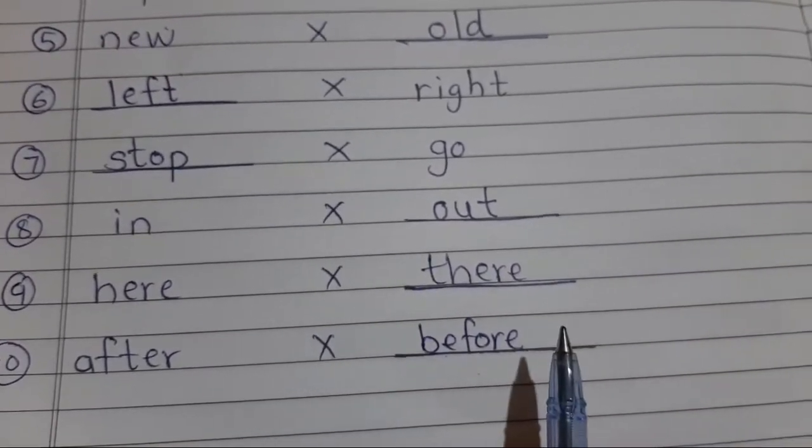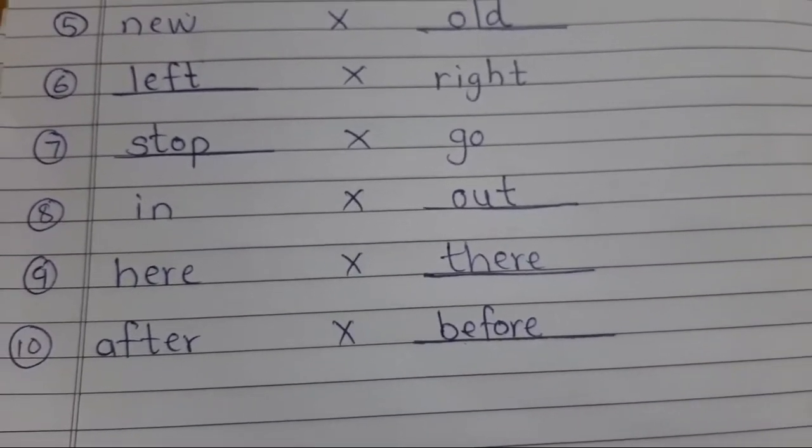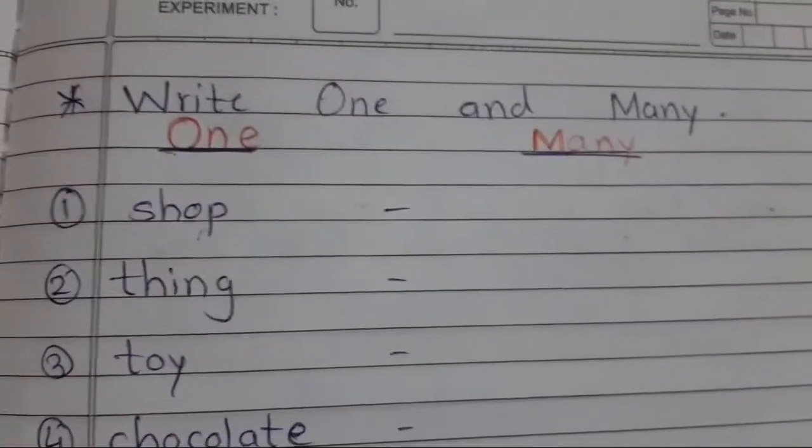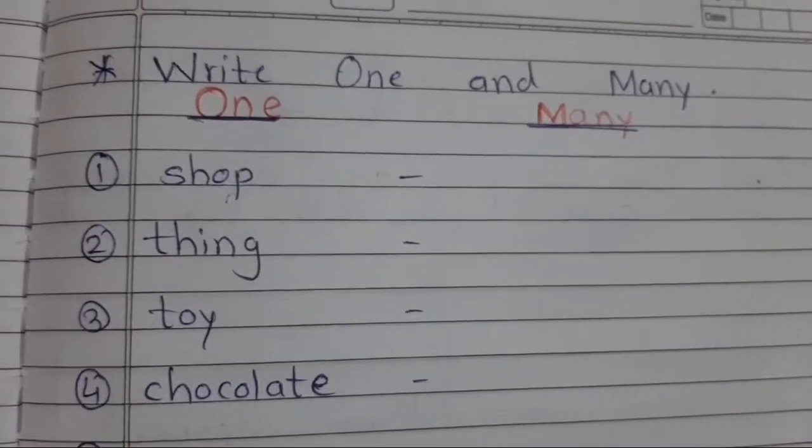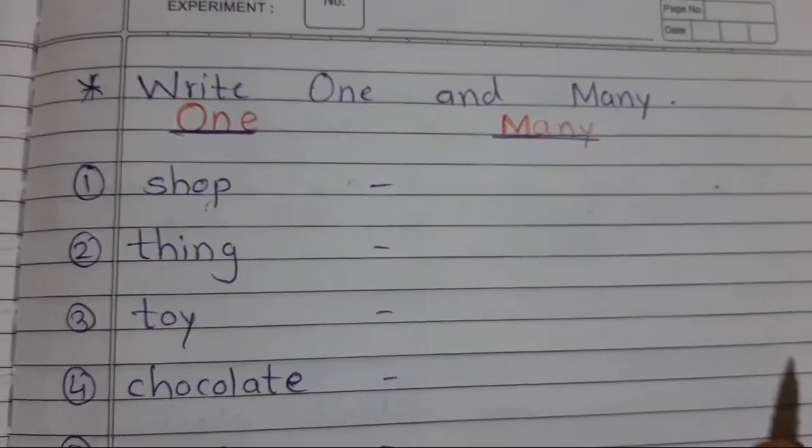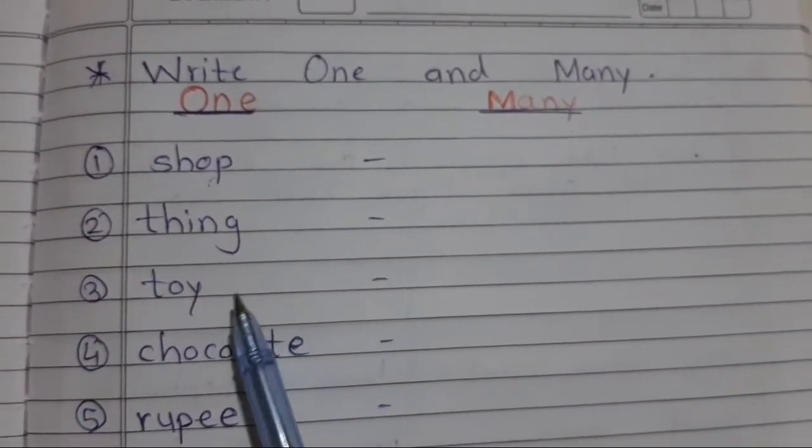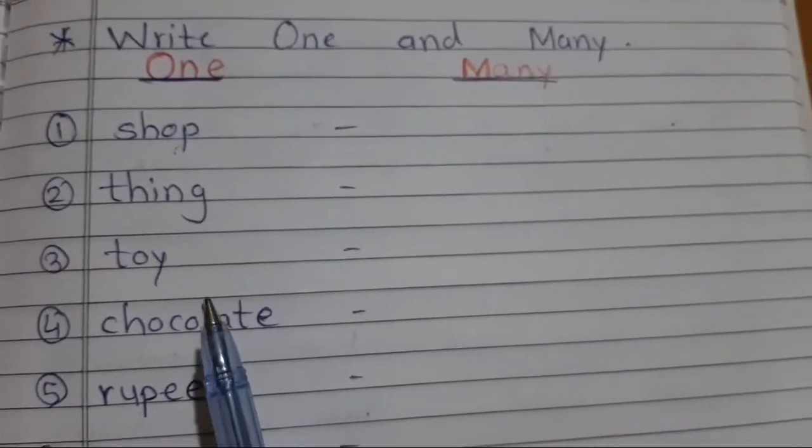Now after writing ten opposite words, we are here to write one and many. The next question is write one and many. What you have to do is here? We learn, already we learn it. Same word you have to write down in many, but you have to just add S after it.